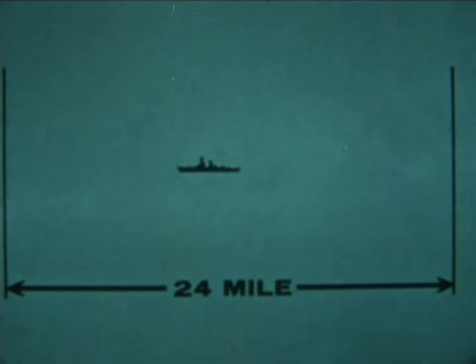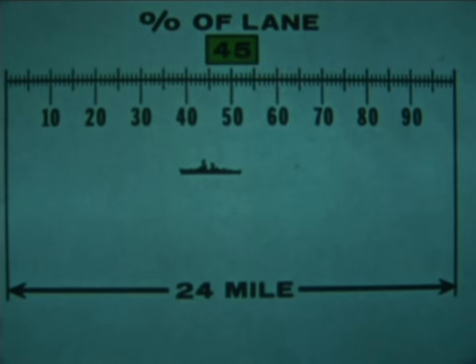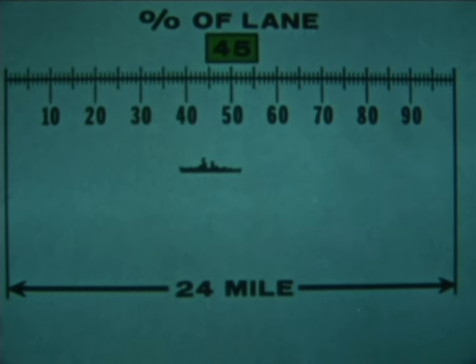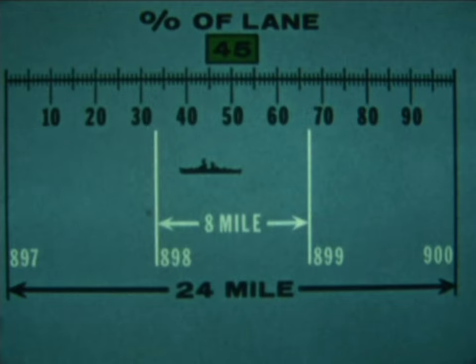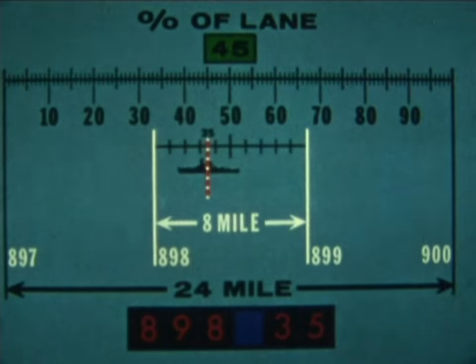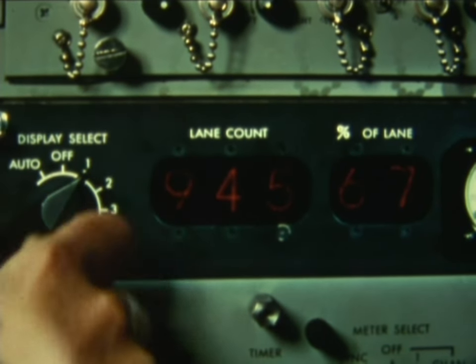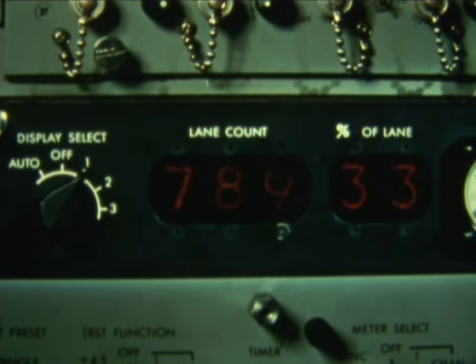Here's the way it works. By dead reckoning or other navigational means, we can establish our rough position within one of the 24-mile lanes. Then a percent of lane reading immediately tells us in which part of the large lane the ship is located. Since the 24-mile lane corresponds to three eight-mile lanes, knowing the percent of lane enables us to place the ship in one of the eight-mile lanes, and we can reset or re-initialize the receiver accordingly and resume automatic tracking.